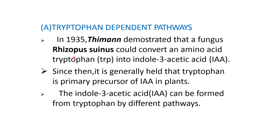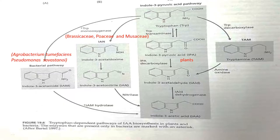In the tryptophan-dependent pathway, in 1935 Thimann demonstrated that the fungus Rhizopus sinensis could convert the amino acid tryptophan into indole-3-acetic acid. Since then, it is generally held that tryptophan is the primary precursor of indole-acetic acid in plants. This picture represents the tryptophan-dependent pathway of indole-3-acetic acid biosynthesis in plants and bacteria.